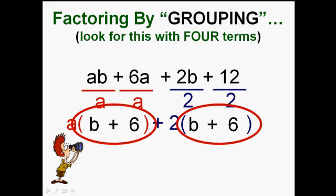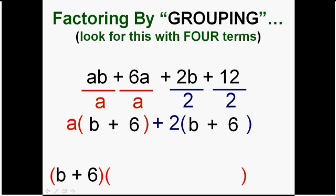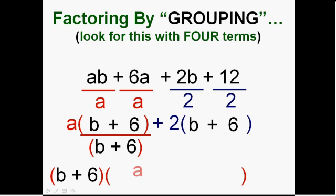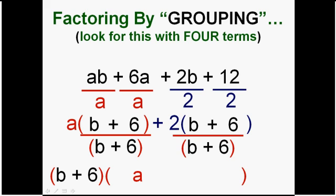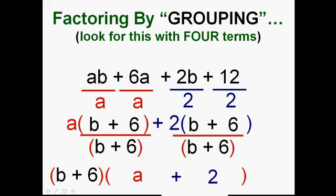Now we've done well but we're not done yet. Do you see that there's a b plus 6 in both of these? So as I said we're basically just going to do factoring out the greatest common factor twice. Let's do it again with the result. Taking out the b plus 6 from the red group I get an a, and from the blue group I get a plus 2.